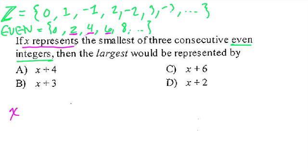So if x is, let's say, 2, so if x equals 2, then the next consecutive even integer would be x plus 2. We would get 4. 2 plus 2 is 4,